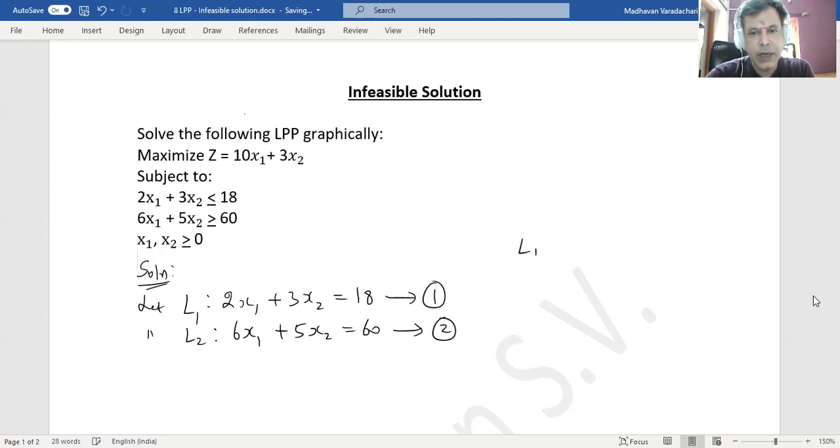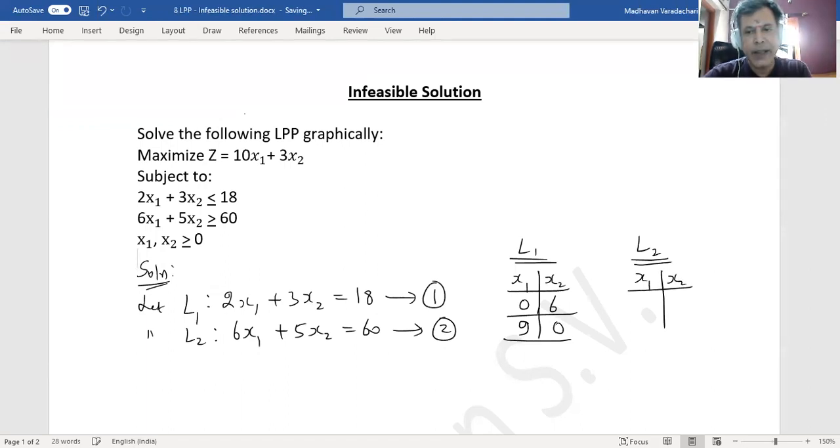Now let us consider line 1 and find out by assigning some values. If I put x1 as 0 in line 1, this term will become 0, so 3x2 equals 18 means x2 will be 6. And then assigning x2 as 0, this term will become 0, so 2x1 equals 18, that means x1 will be 9. Similarly for the second line, assigning x1 as 0, 5x2 equals 60 means x2 will be 12. Assigning x2 as 0, 6x1 equals 60 means x1 will be 10.